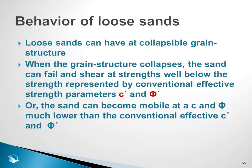The behavior of loose sands: loose sands can have what is called a collapsible grain structure. When the grain structure collapses, the sand can fail and shear at strengths well below the strengths represented by conventional effective strength parameters. So if we have in Q-P' space, we have our critical state line. The critical state line represents the point of failure or ultimate strength. It is possible to fail at a strength well below that represented by C' and Phi'. Or stated another way, the sand can become mobile at a C and Phi much lower than the conventional effective C' and Phi'.